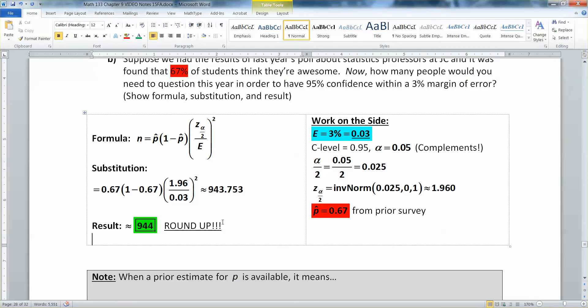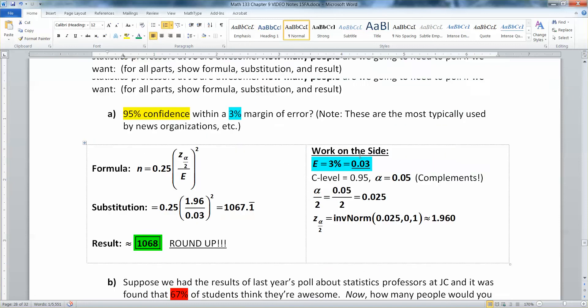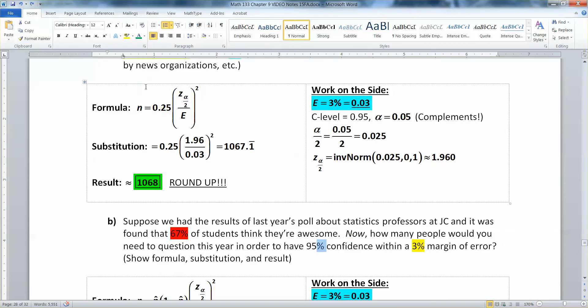Now look what happened here. It's the same stuff. So we have n equals something times z alpha over 2 over error squared. It was 1.96 for both of them because that came from our confidence level. It was 0.03 for both of them. There's our 3% margin of error, just like in the other one above. There's our 95% confidence, just like in the other one above. I had these reversed. So 95% confidence was yellow in both of them. 3% margin of error was blue in both of them. It's the same for both of them.